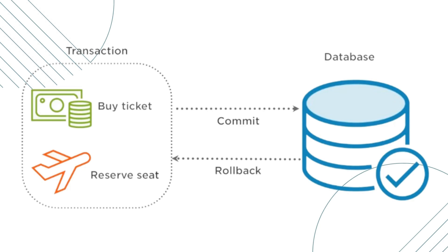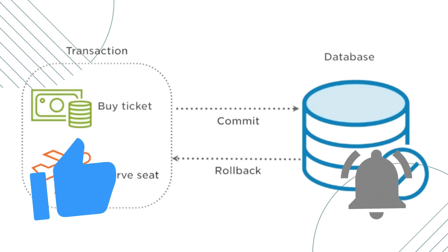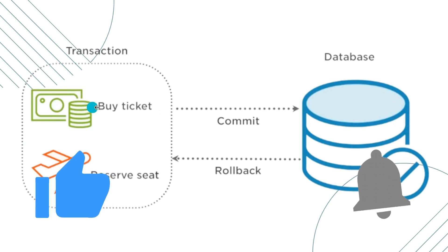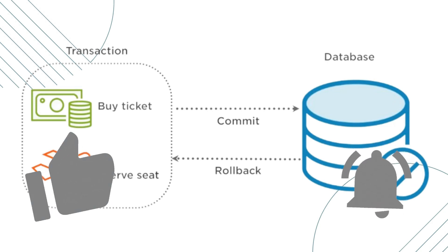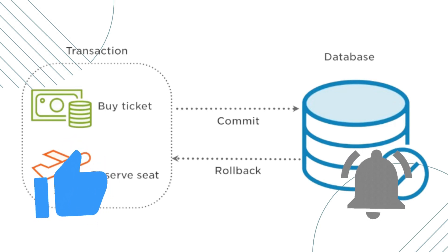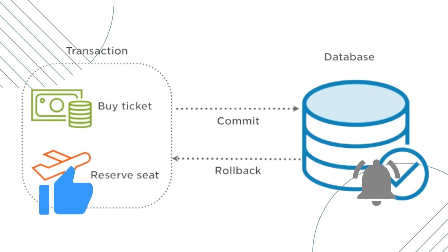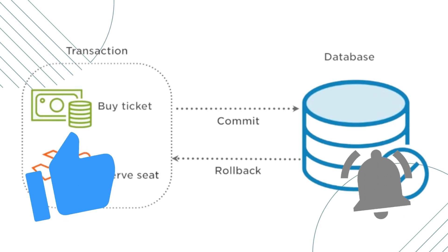Let's look at a real-time example to get a better understanding of transaction management. There is a user trying to book a flight ticket. In this scenario there are two operations performed as one single operation: one is storing the user information, and the other is storing the booking confirmation information. The user information will be stored in the user_info table and booking confirmation details in the booking_details table. These two operations will perform as one single transaction.